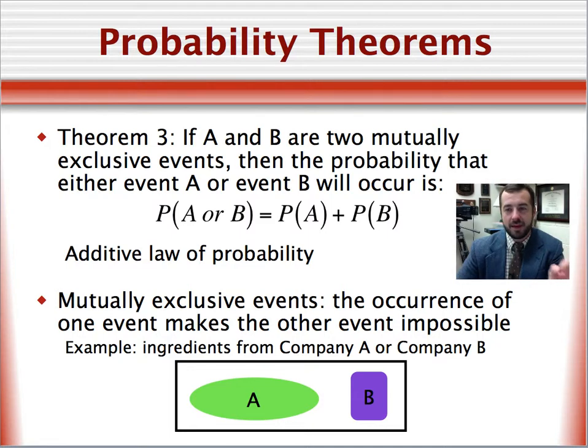Theorem three states that if A and B are two mutually exclusive events, then the probability that either event A or event B will occur is the sum of those probabilities. This is the additive law of probability. Mutually exclusive means that the occurrence of one event makes the other event impossible. For example, think of throwing a die. If on one throw of a die, a three occurred, in other words event A, then event B, say five on that piece of die, could not possibly occur, because a three is on top.